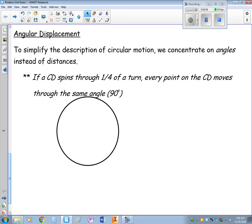So, let's get started with angular displacement. We want to simplify the description of circular motion. So, we're going to concentrate on angles instead of distances. We could talk about distances, but the math gets pretty tricky pretty quickly. If a CD spins through one quarter of a turn, every point on the CD will move through the same angle, which happens to be 90 degrees.